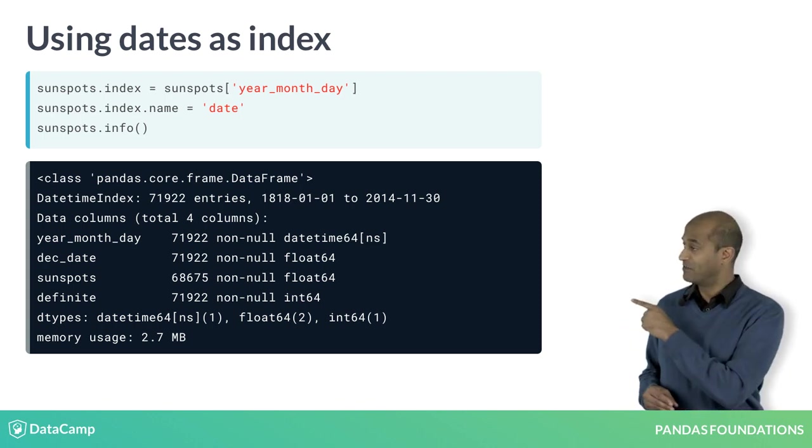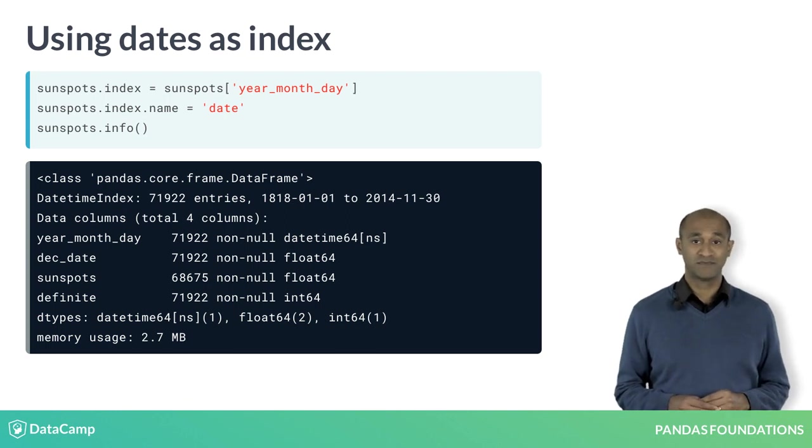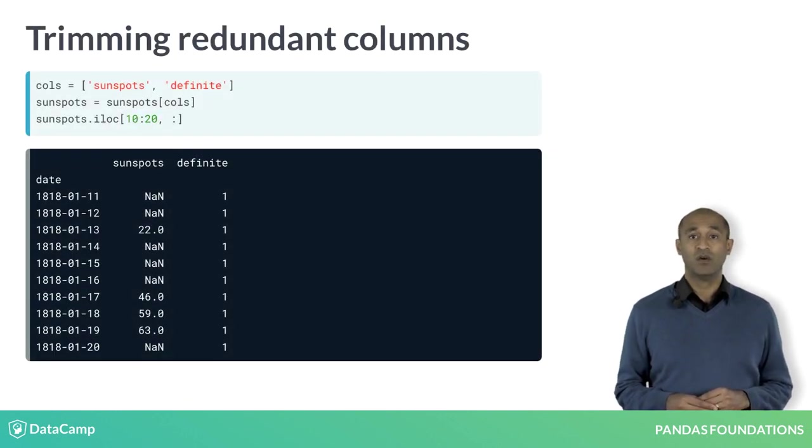Notice we still have the year, month, day and dec date columns. To get rid of them, we list the meaningful column names and extract them. The result is a more compact data frame with only the meaningful data.